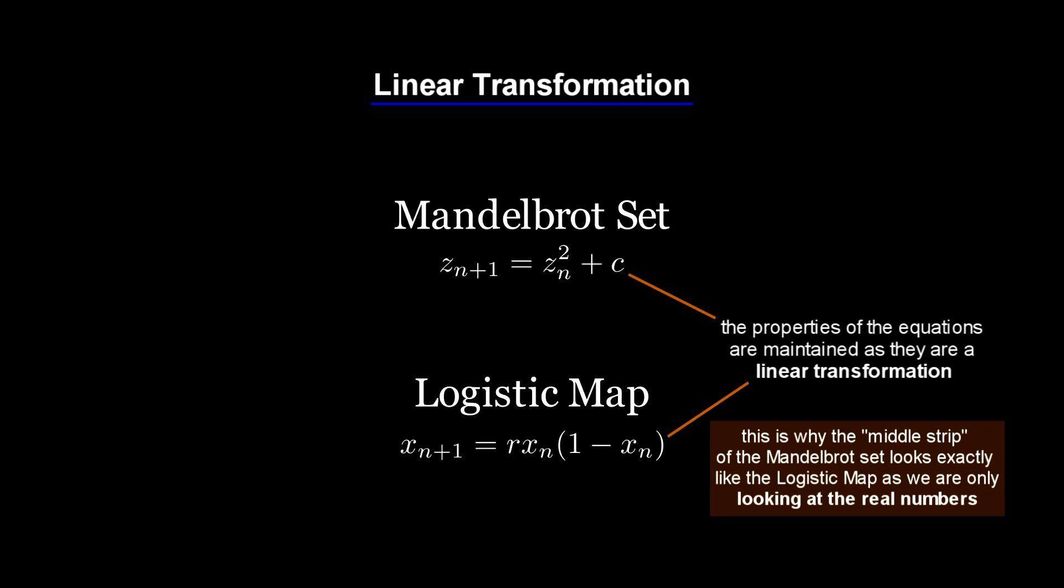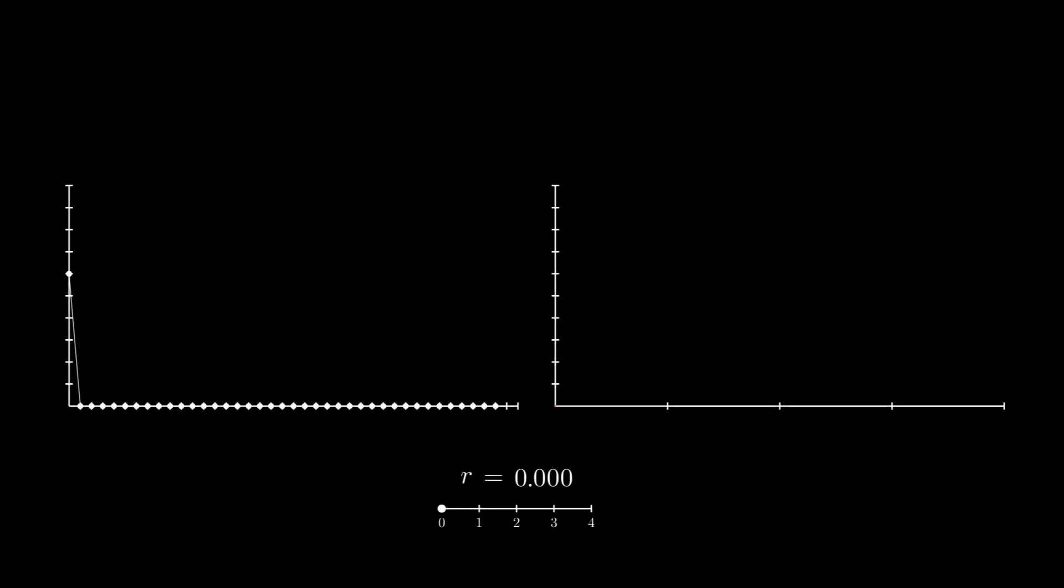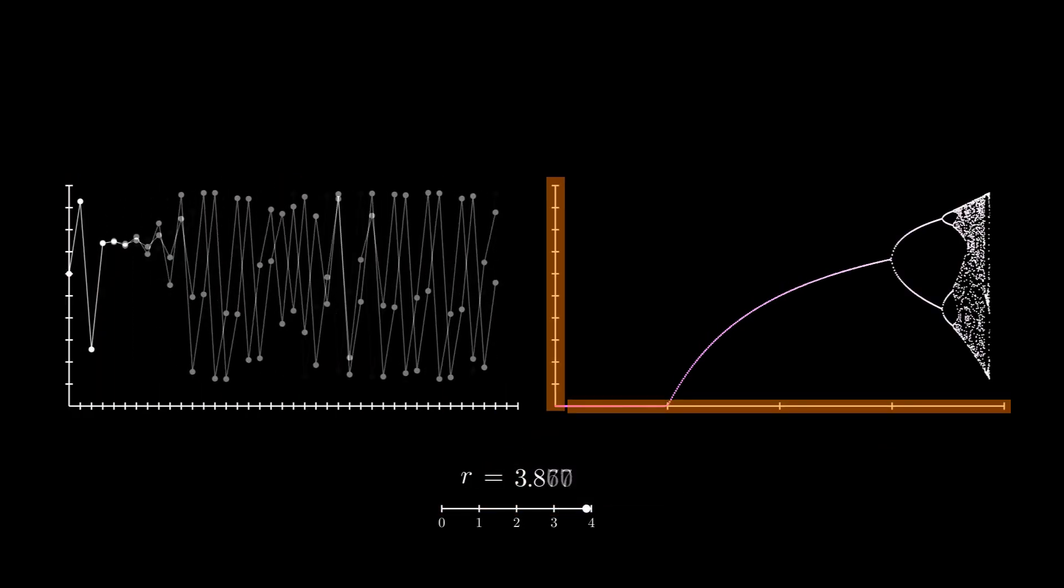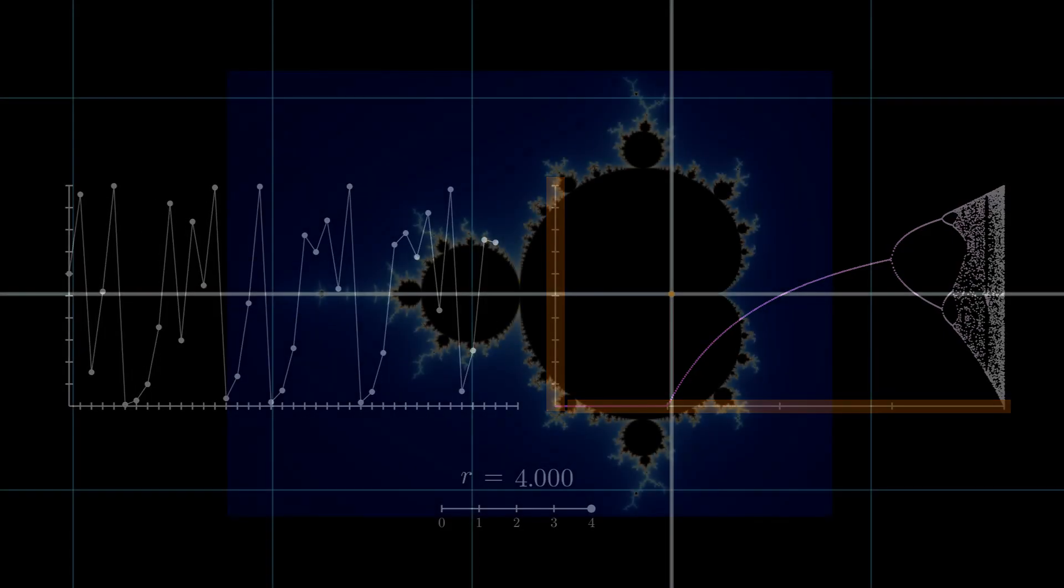We need to find a way to plot the long term behavior of the Mandelbrot set. This is easily achieved for the logistic map, as we have one dimension for the initial value and one dimension for the long term behavior, giving us a two dimensional diagram. However, the Mandelbrot set is two dimensional, and the long term behavior is also two dimensional, which means we need four spatial dimensions to truly visualize the long term behavior of every point. Because of this, we need to adjust what we measure, and unfortunately this means that we will lose some information.